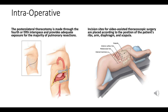A thoracotomy is a surgical incision into the chest wall allowing access to the thoracic organs. A posterolateral thoracotomy — made lateral and towards the posterior of the patient at the fourth or fifth interspace — provides a good balance between achieving adequate exposure to the lungs and minimizing potential damage to critical structures. This approach is commonly used for lobectomies and pneumonectomies, offering a wide view of the chest cavity.